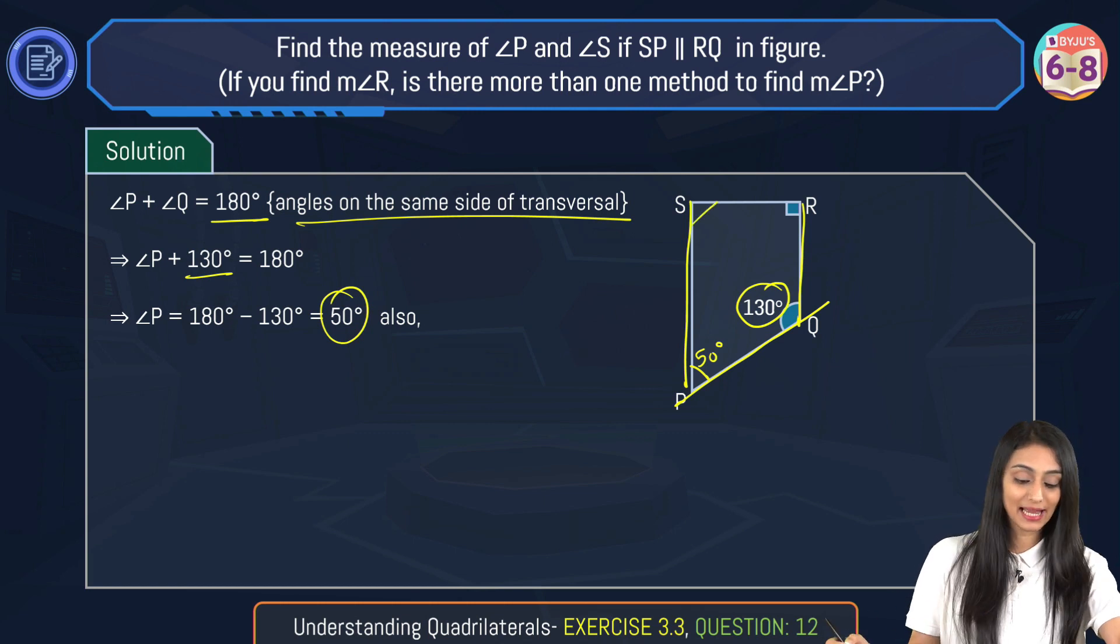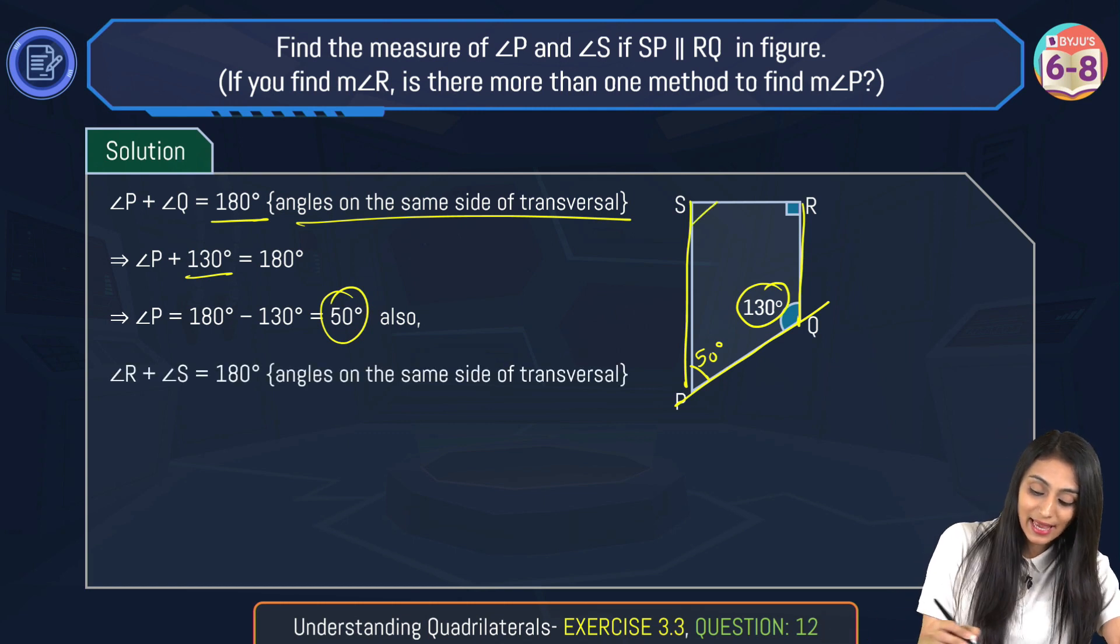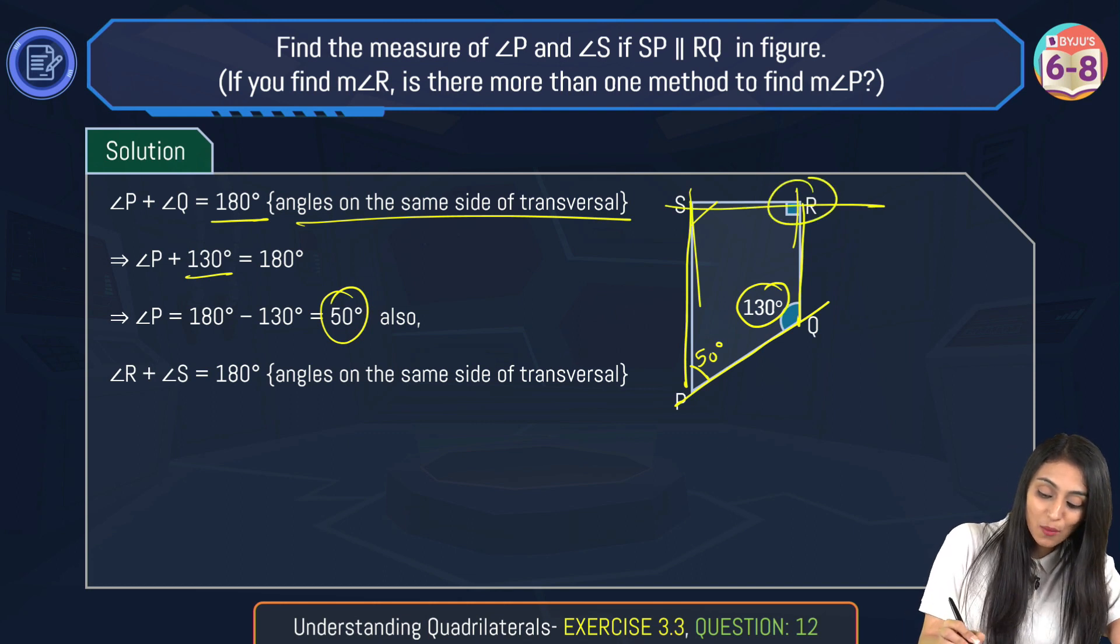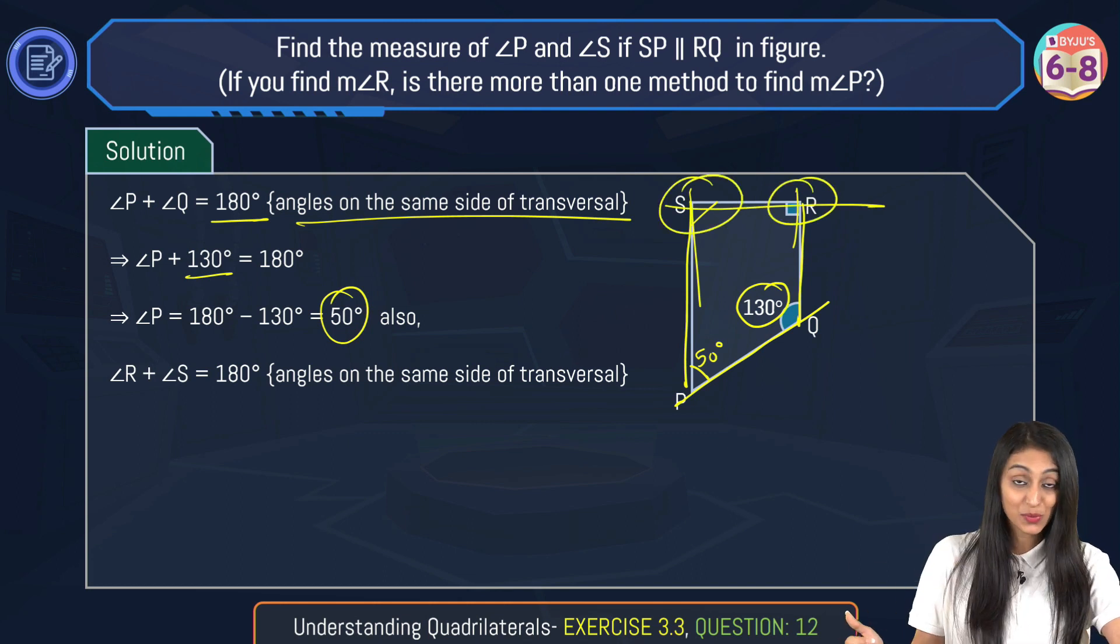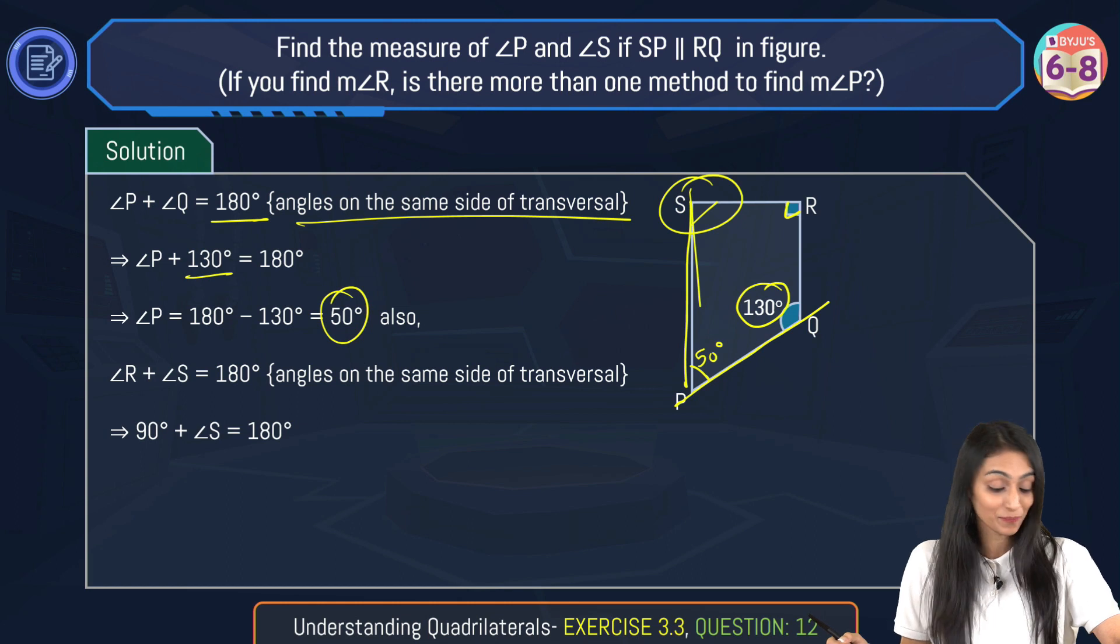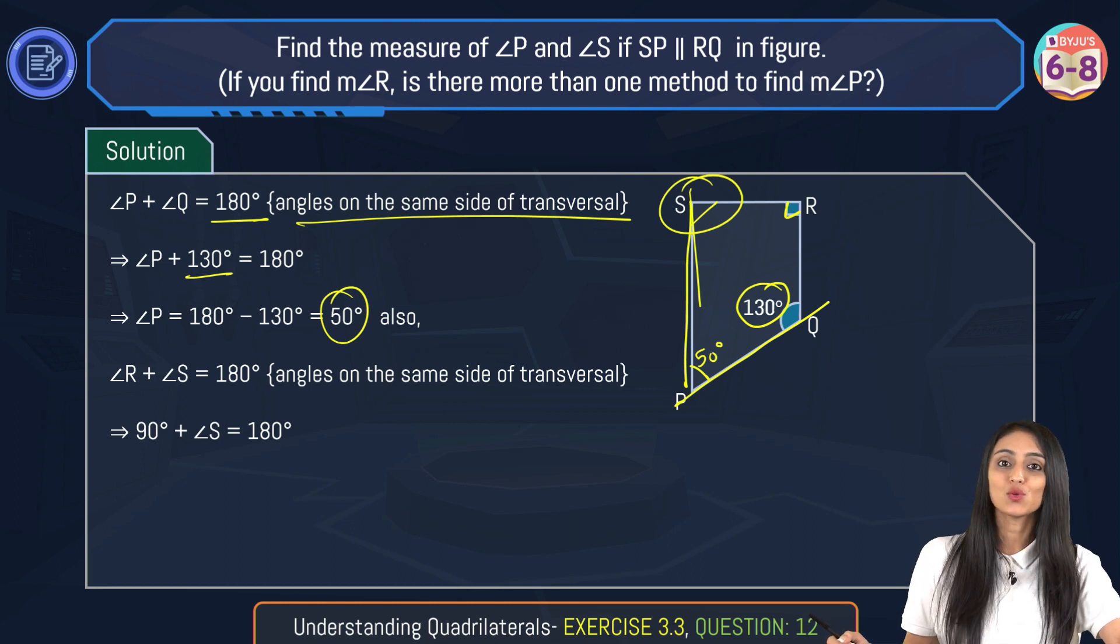Now I need the value of angle S. We know one thing: again these lines are parallel, this is a transversal, so these are also forming angles on the same side of the transversal. Their sum would also be 180 degrees. If this is 90 degrees, because we can already see the 90 degree symbol, that's 90 degrees plus angle S equals 180 degrees.